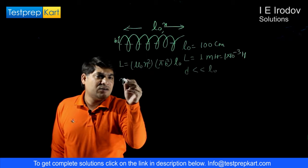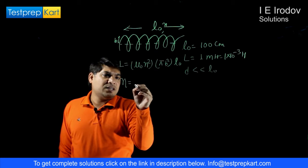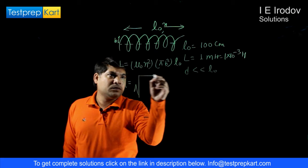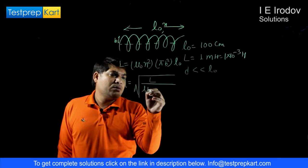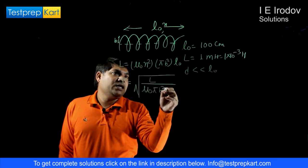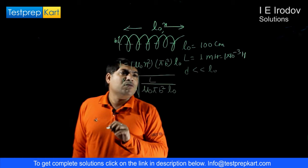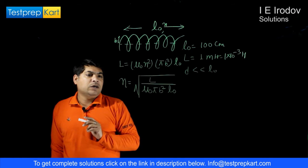From here we can find out number of turns. Number of turns would be √(L/(μ₀πB²L₀)).